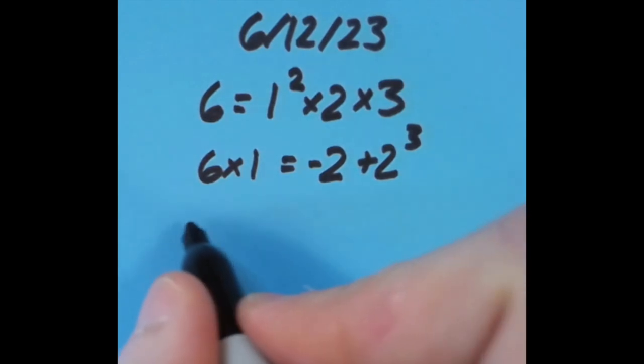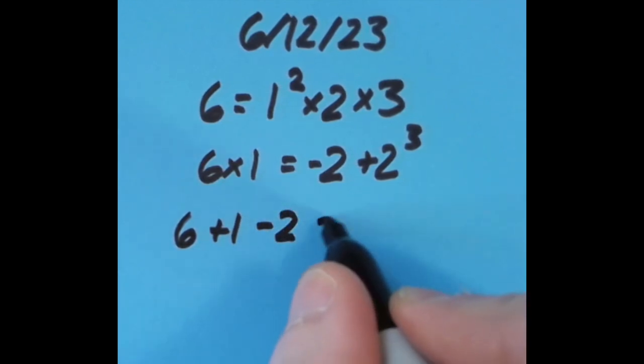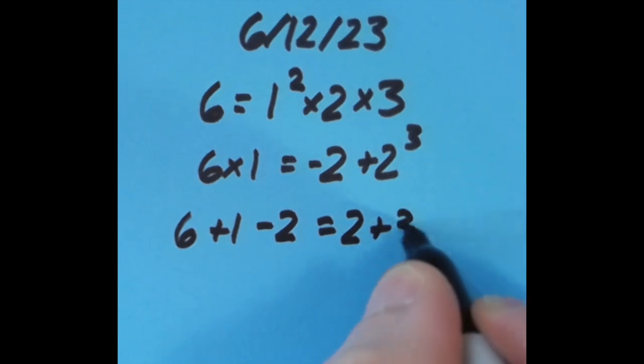With the equal sign over another spot to the right, I said that 6 plus 1 is 7, minus 2 is 5, and so is 2 plus 3.